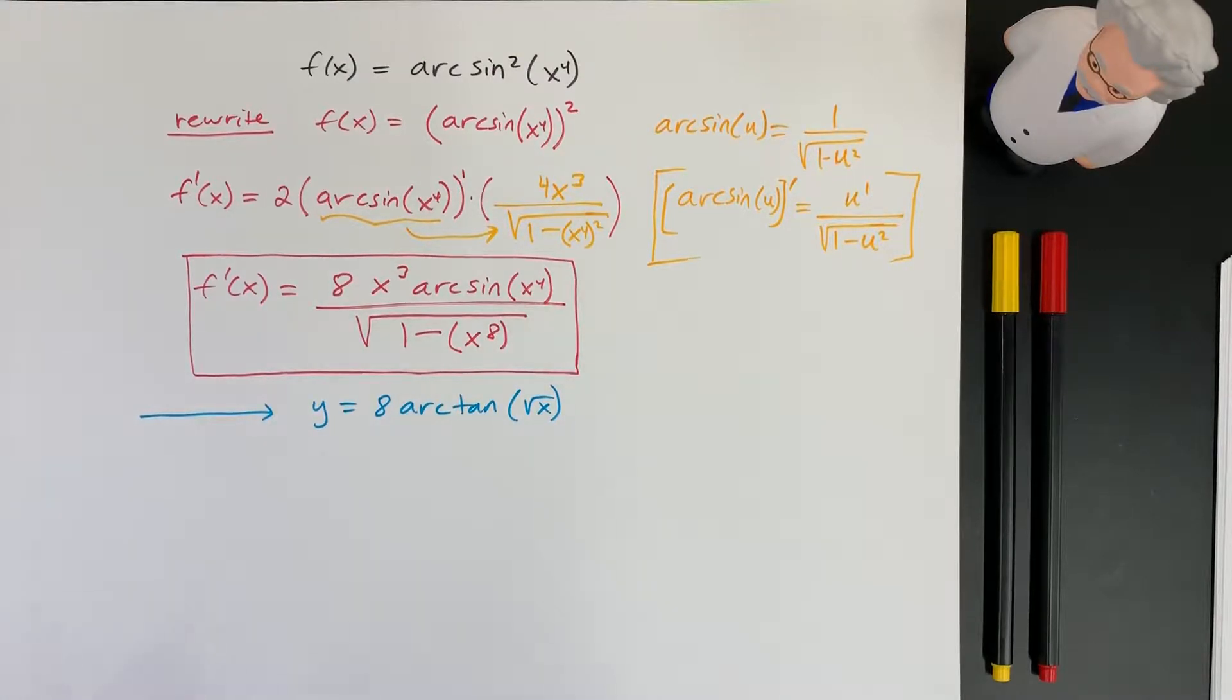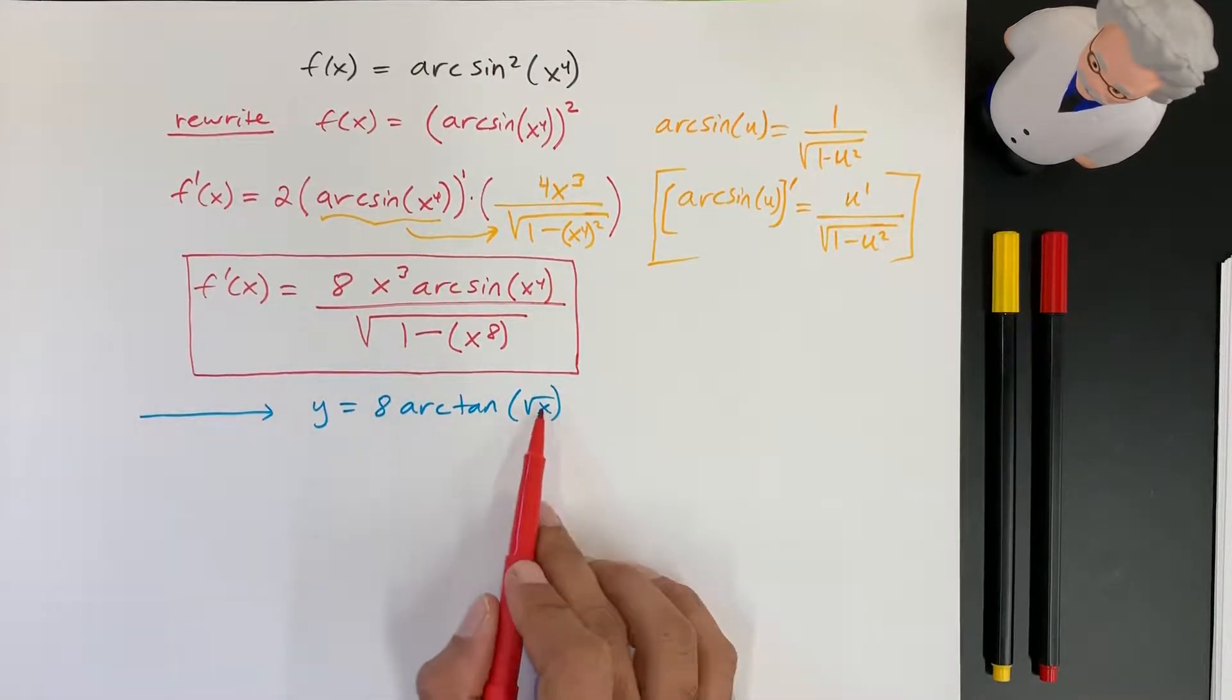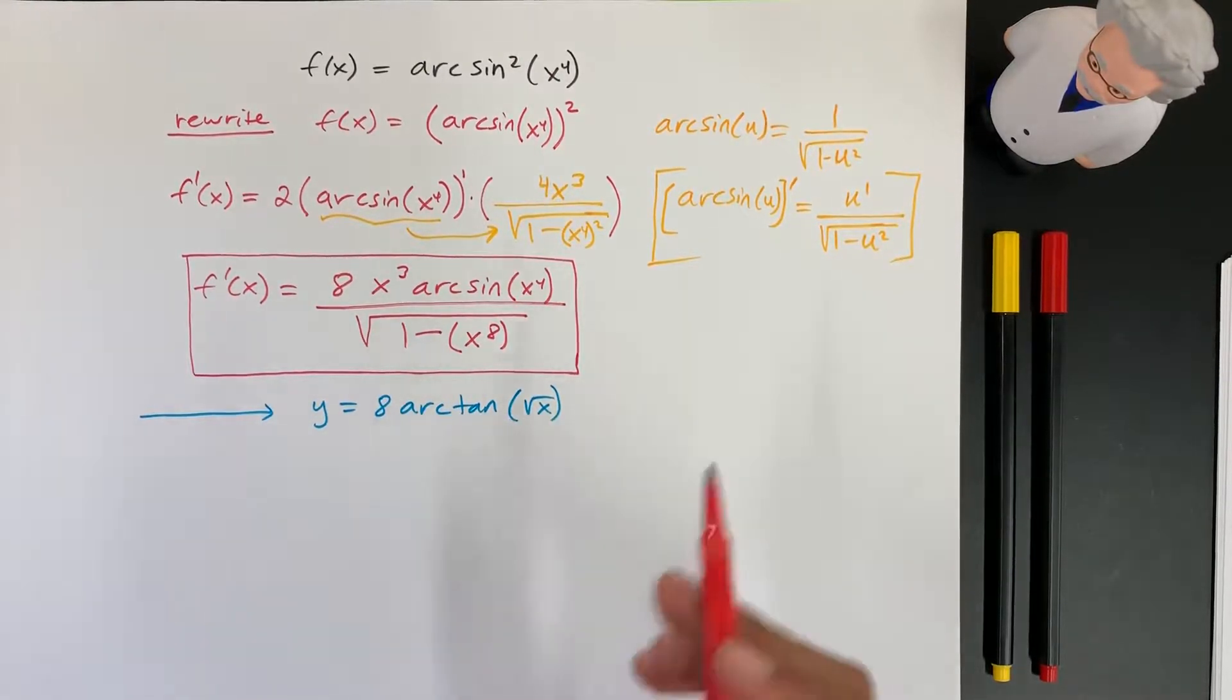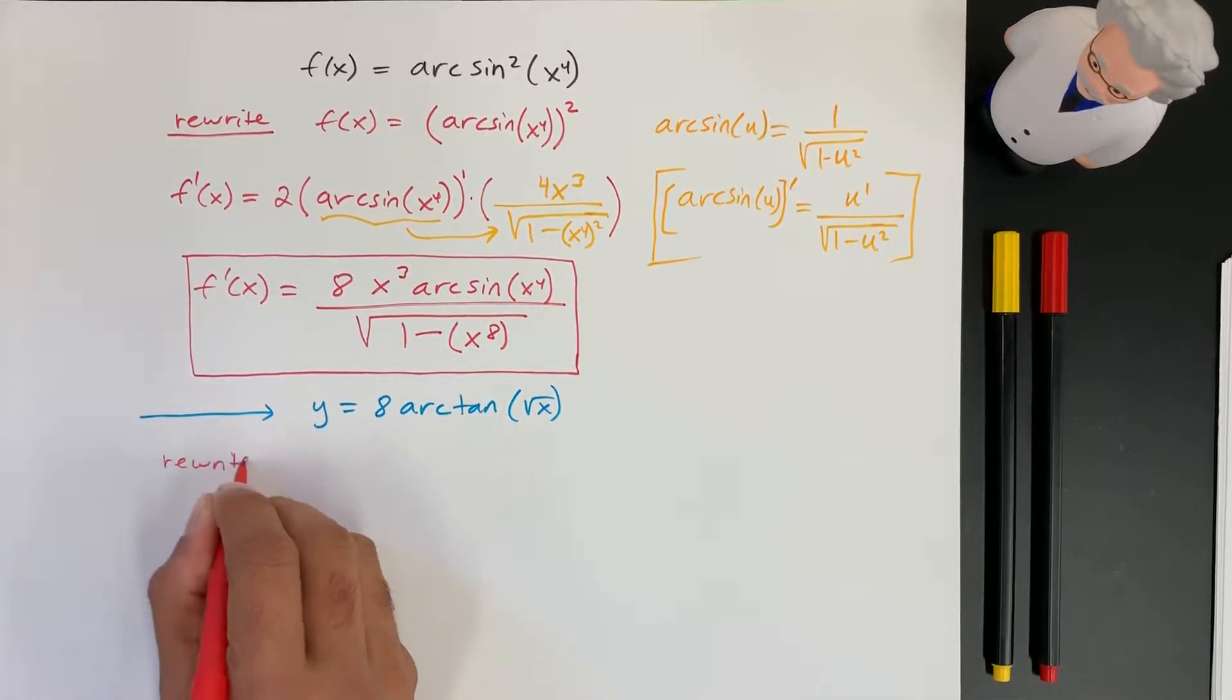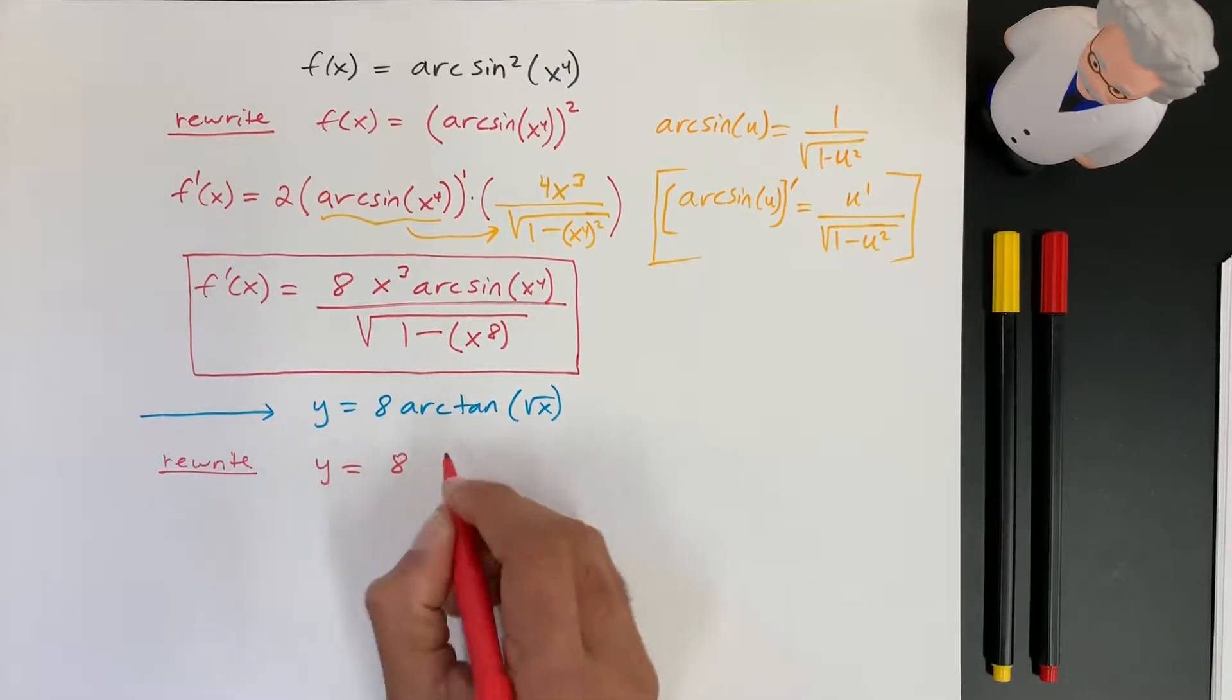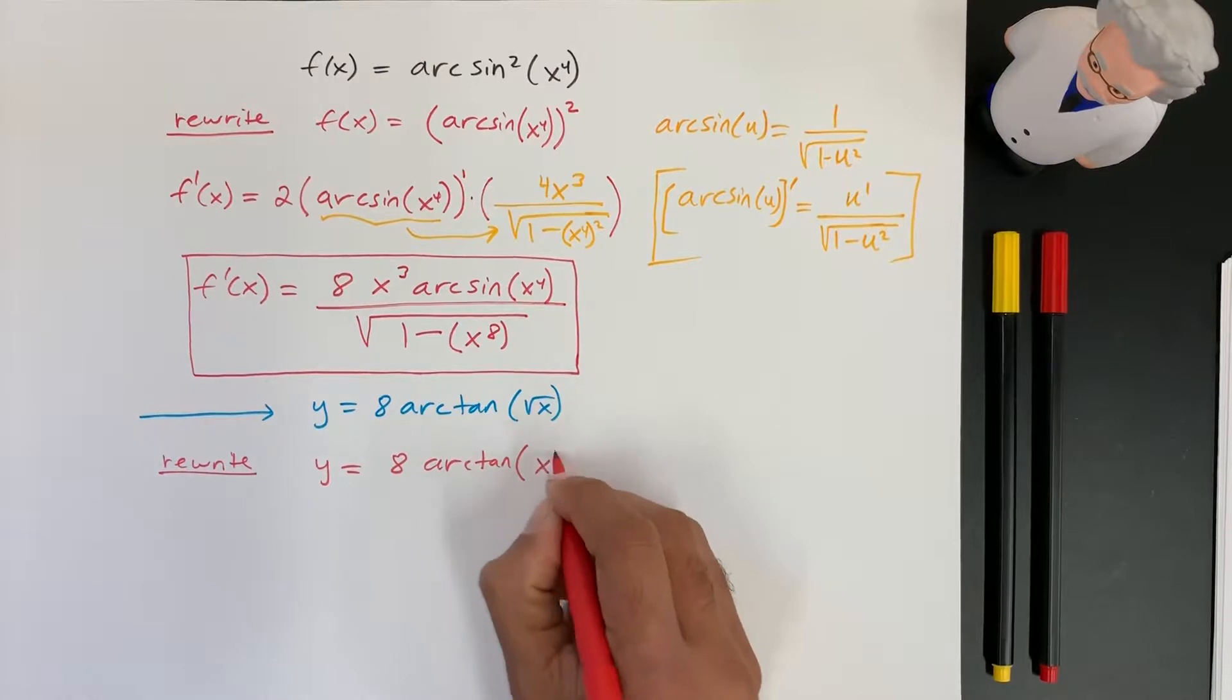Alright, so I labeled this one y instead of f(x), but they mean the same thing. So, let's take the derivative, but before that, I see something I don't like. I don't like square roots, I want them to have the exponential as a fraction. So, let's rewrite this. We're going to have y is equal to 8 arctangent of x to the 1 half.